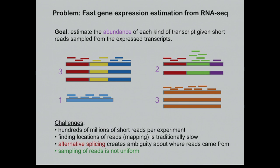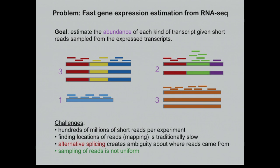This is a hard problem for several reasons. First, the scale of even a single experiment is large — there are hundreds of millions of reads typically. Second, finding the locations of reads matching a given transcript has traditionally been slow. Third, alternative splicing creates ambiguity: if an exon is present in two different isoforms, we don't know whether a read came from one isoform or the other. And fourth, the sampling of reads is not uniform — there are sequence-specific, position-specific, and other experimental biases.